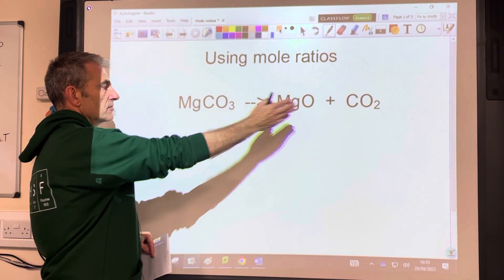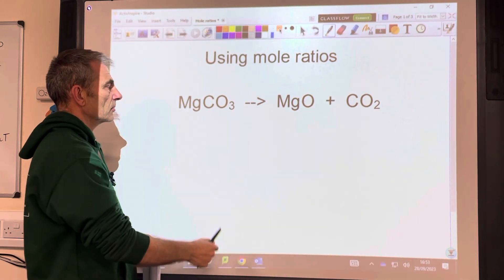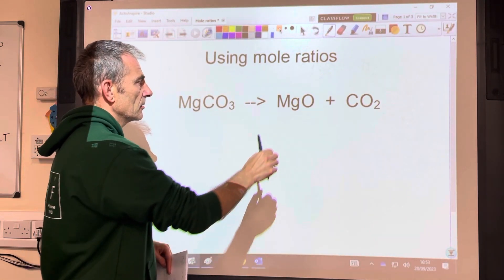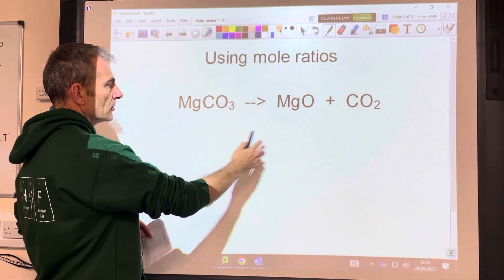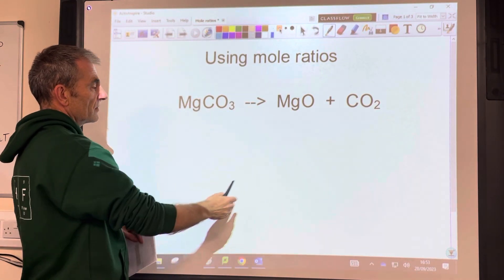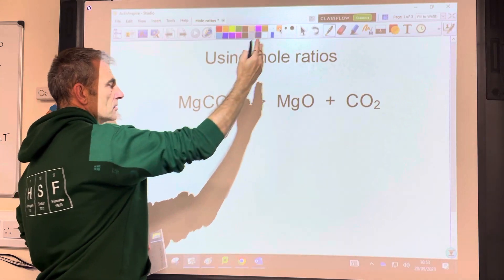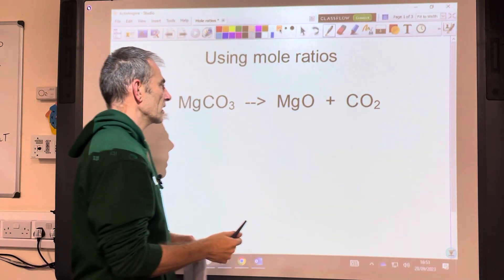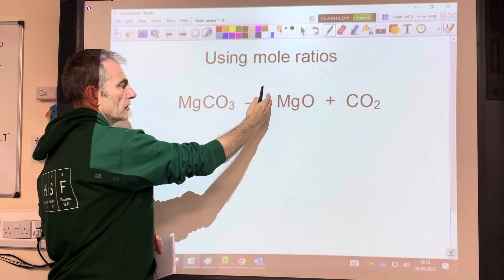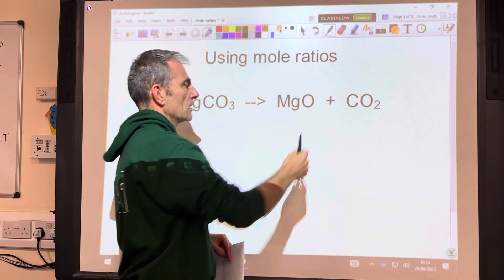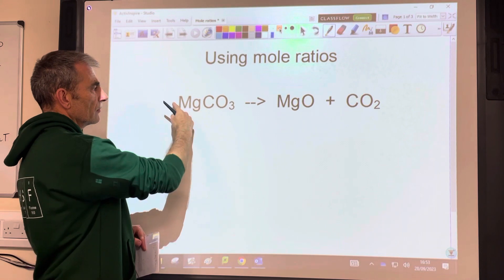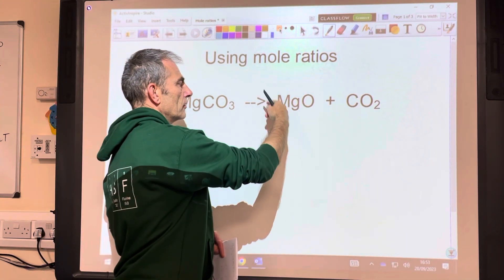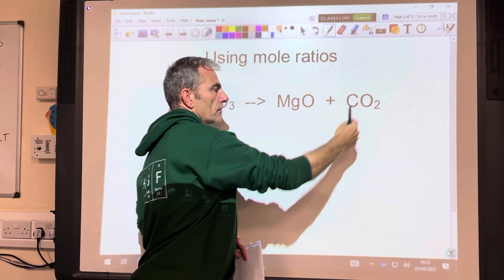So we'll start with this really simple equation. We've got magnesium carbonate makes magnesium oxide and carbon dioxide. So the mole ratio in this equation is effectively 1 to 1 to 1. You notice there's no number in front of any of the species in the equation. It is balanced. So what that means is for one mole of that, you'd make one mole of that and one mole of that.